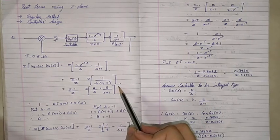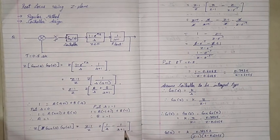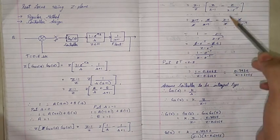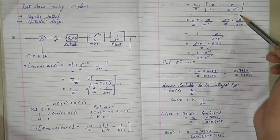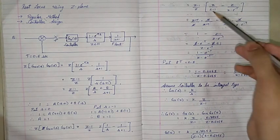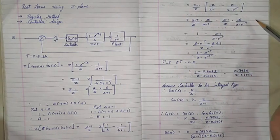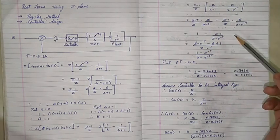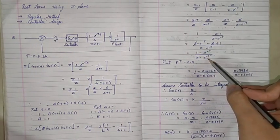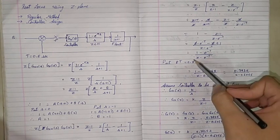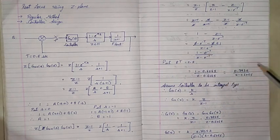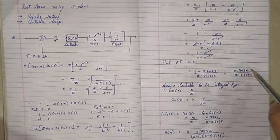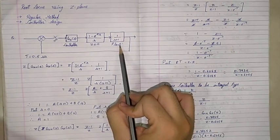Putting S equals 0 gives A equals 1, and S equals minus 1 gives B equals minus 1. So we get 1/S minus 1/(S+1). The Z transform of 1/S is Z/(Z minus 1), and the Z transform of 1/(S plus 1) is Z/(Z minus e raised to minus T). After cancellation and taking the LCM, the final term is (1 minus e raised to minus T) upon (Z minus e raised to minus T). Putting T equals 0.5, we get 0.3935 divided by (Z minus 0.6065).